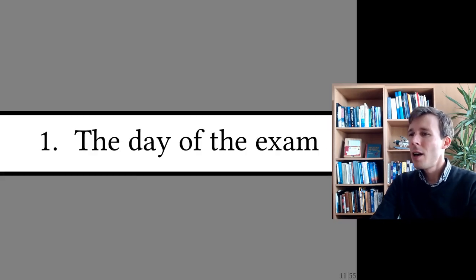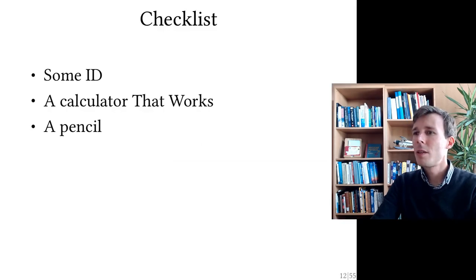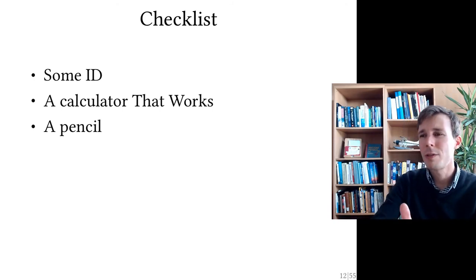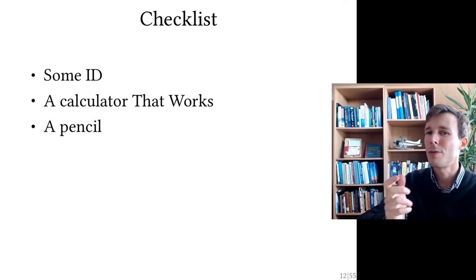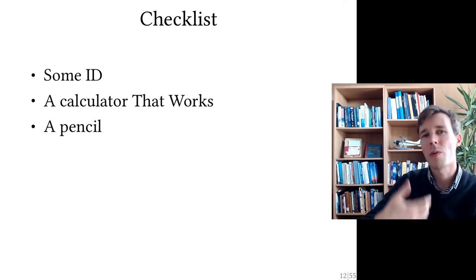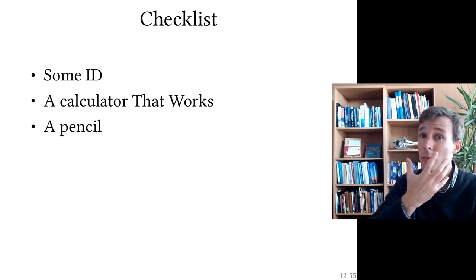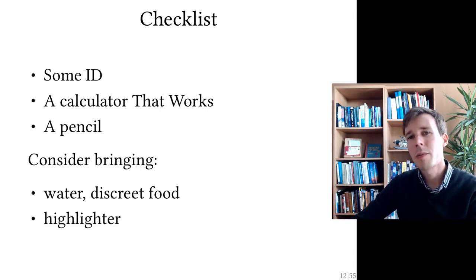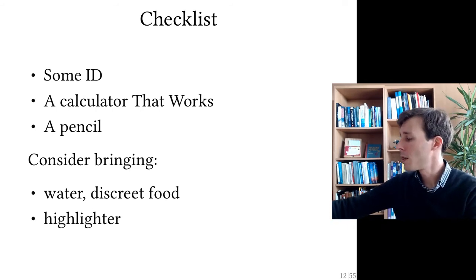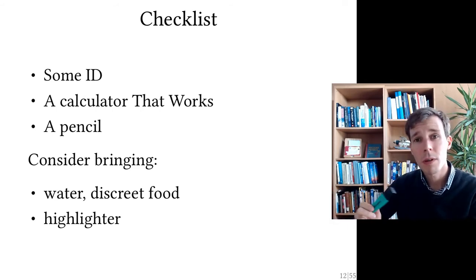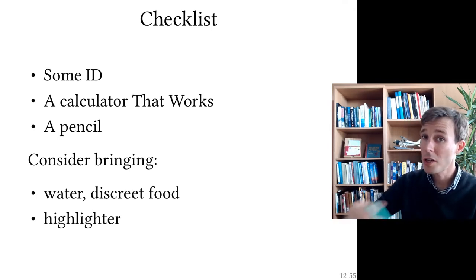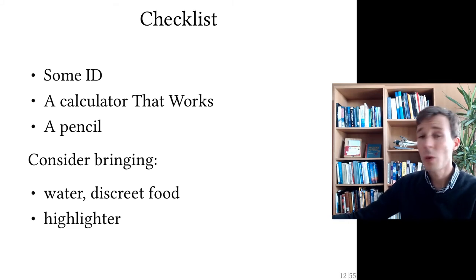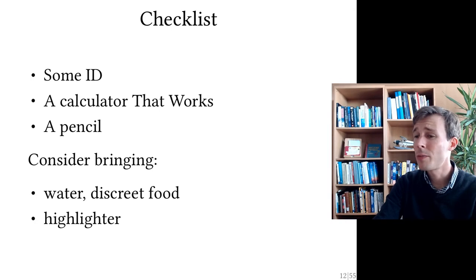Nevertheless, on the day of the exam itself, checklist should be some idea, a calculator that works. Check that you know how your calculator works. You don't want to be finding out how to convert radians to degrees in the middle of the exam. You want to be familiar with it. So practice with it before, bring something to write, bring a face mask too. You may consider bringing water, discrete food, discrete being very silent food, food you can eat very silently. So not a big pack of crisps, but something like a banana would be fine. I use highlighters a lot. I highlight my way through exam papers, in different colors to try to highlight what the data is, what the questions are. And I check things off as I get through the exam, whatever works for you. Make yourself a checklist so that on the day of the exam, when you're stressed, you don't forget anything.